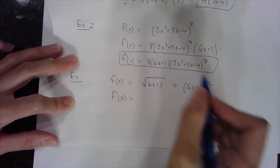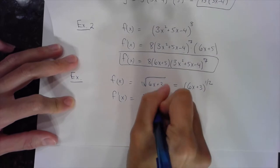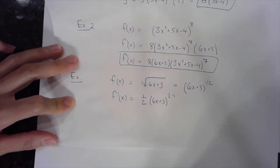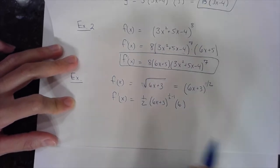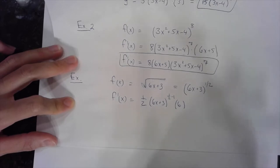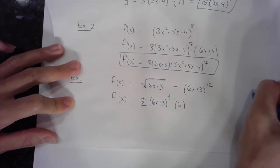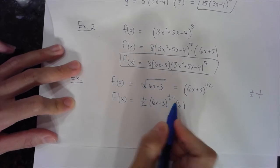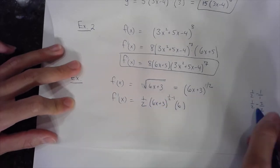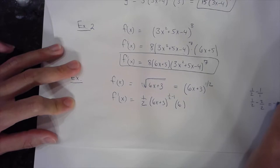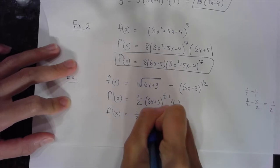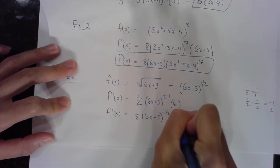I'm going to do the same thing as before: bring that one-half to the front, maintain the base, and subtract 1 from the exponent — that's one-half minus 1. Then multiply by the derivative of the base. One-half minus 1 means one-half minus two-halves, which gives a negative one-half. So my first derivative is one-half times (6x plus 3) to the negative one-half, times 6.